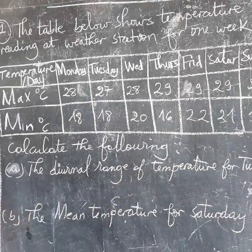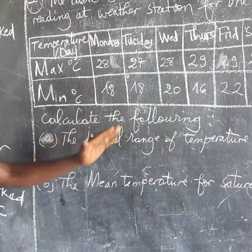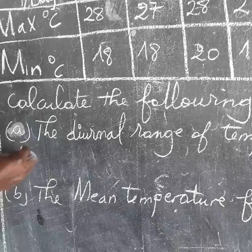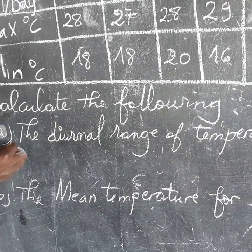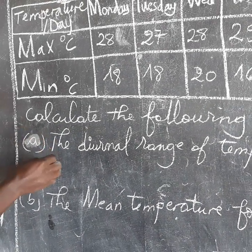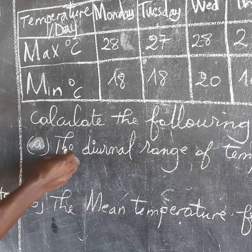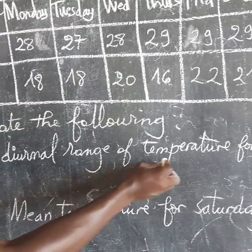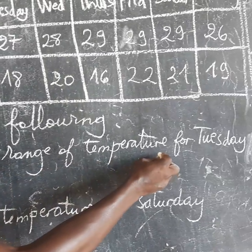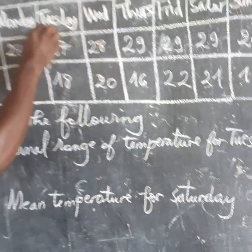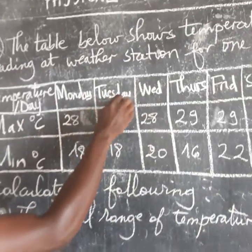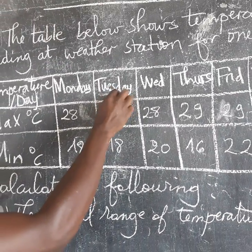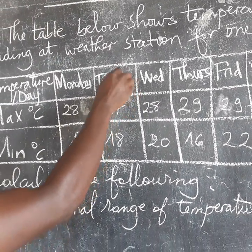The question is asking us to calculate the following. Sub-question A: calculate the general range of temperature for Tuesday.